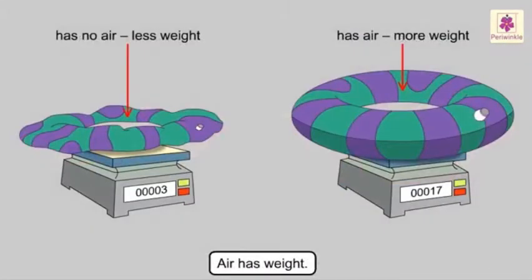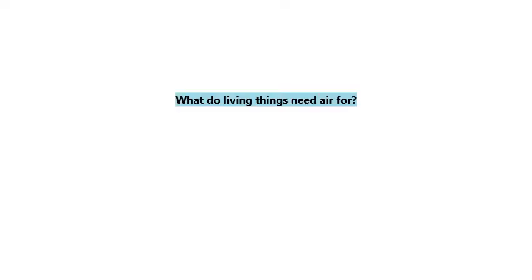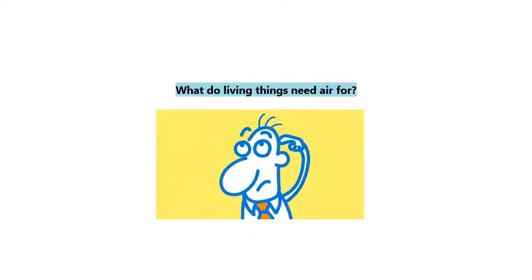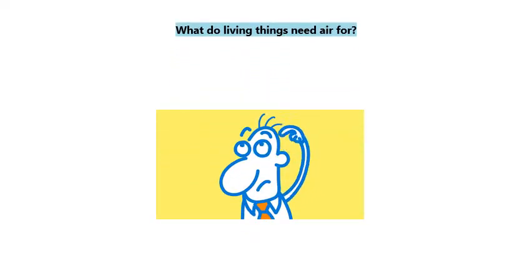Air can give shape to things as it occupies space. Air has weight. So, we know now that air is found everywhere around us, and most of the time, we take air for granted. But we know that it is essential for life. So, what do living things need air for? What do humans, animals, and plants use air for?